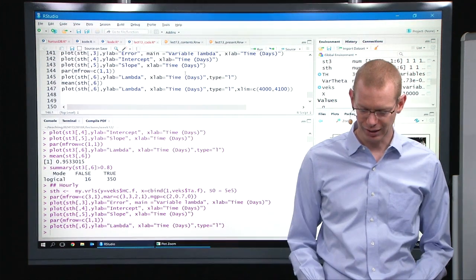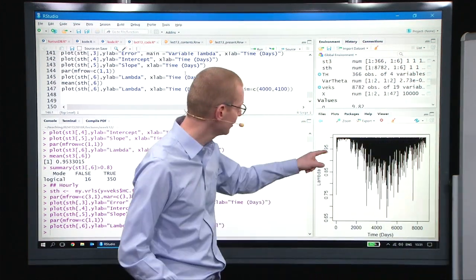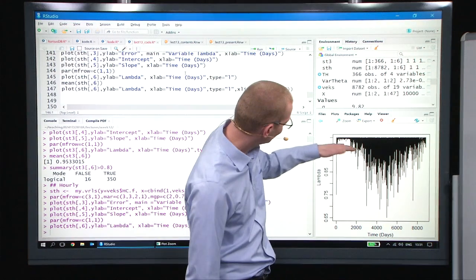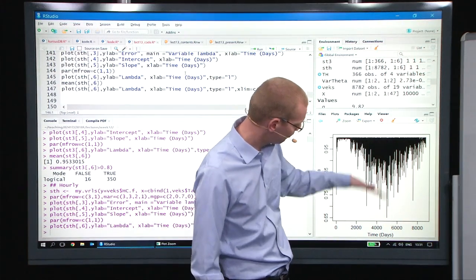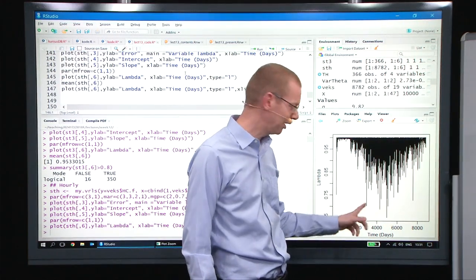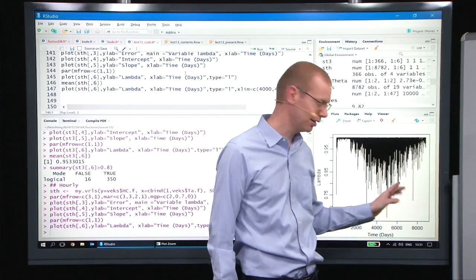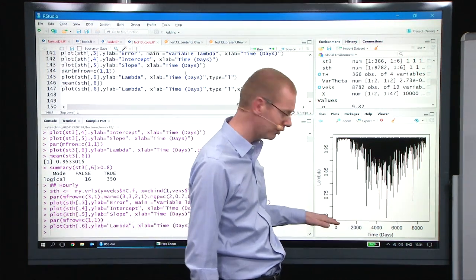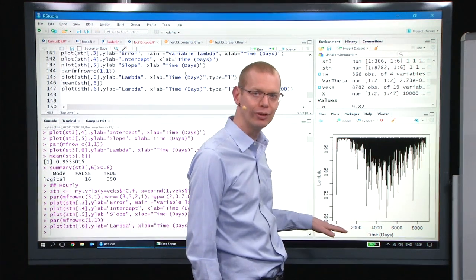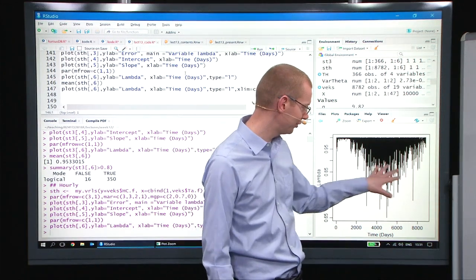As before, let's look at what the lambda is doing. And when we look at this, it's very difficult to see. We are staying up close to one and make a lot of dips. So every so often we forget a lot, but we're nowhere near the 0.5, which was the optimal fixed forgetting factor for this data set.